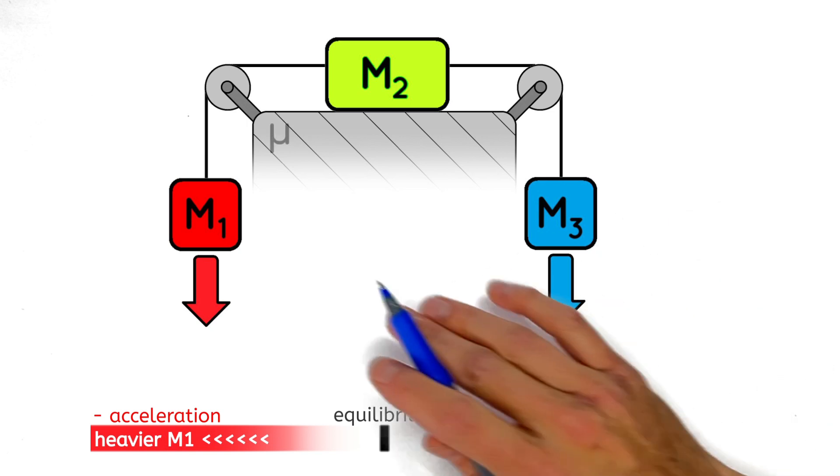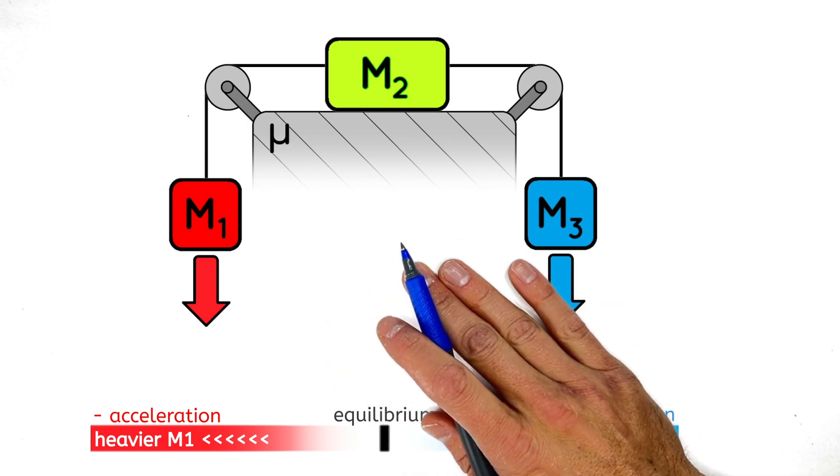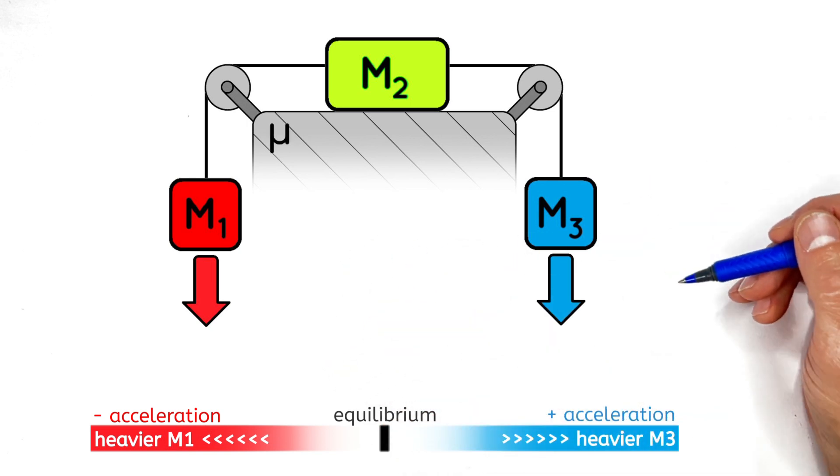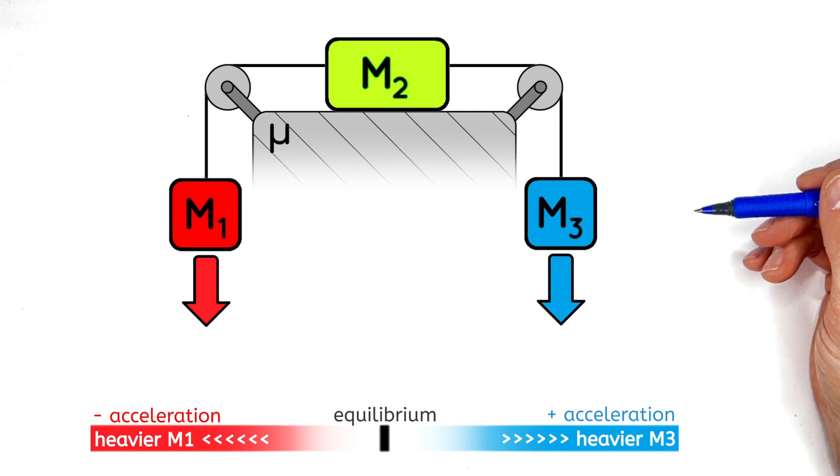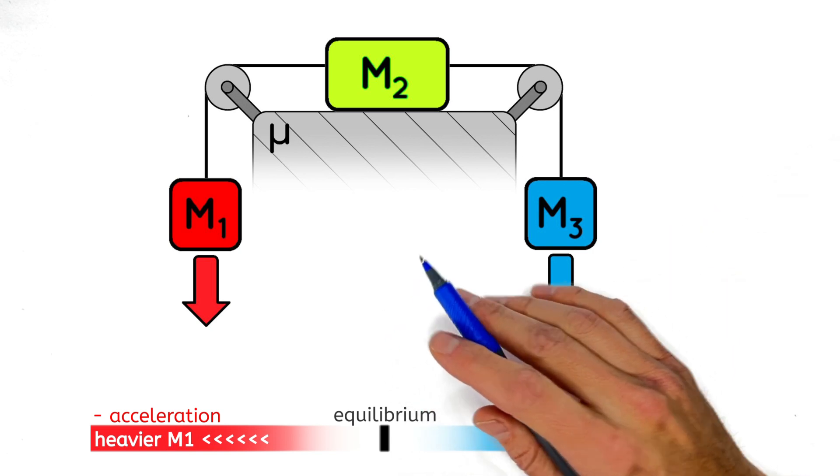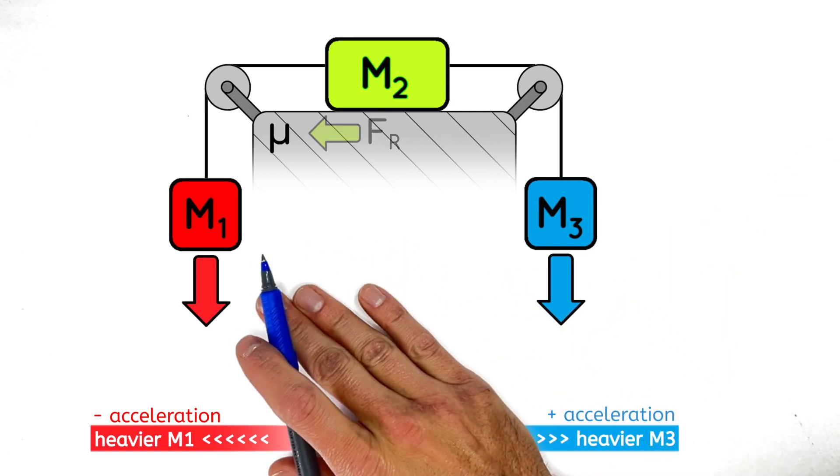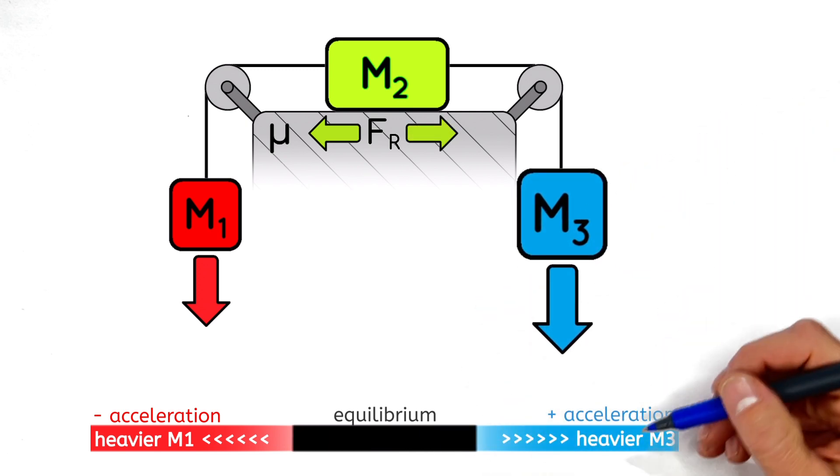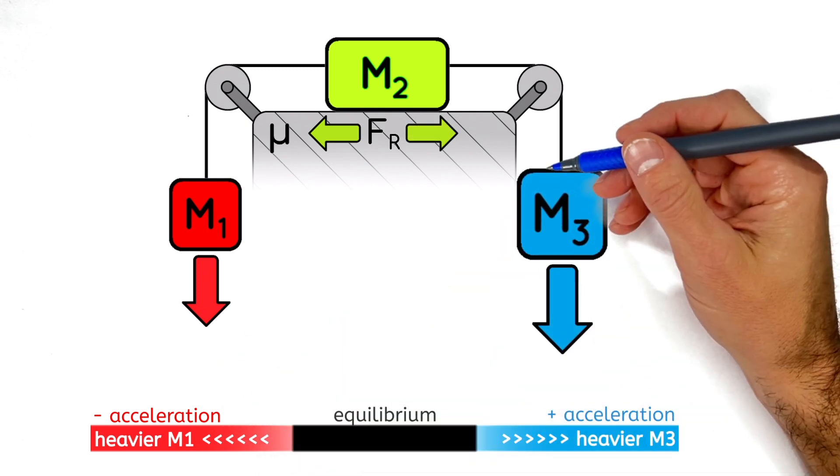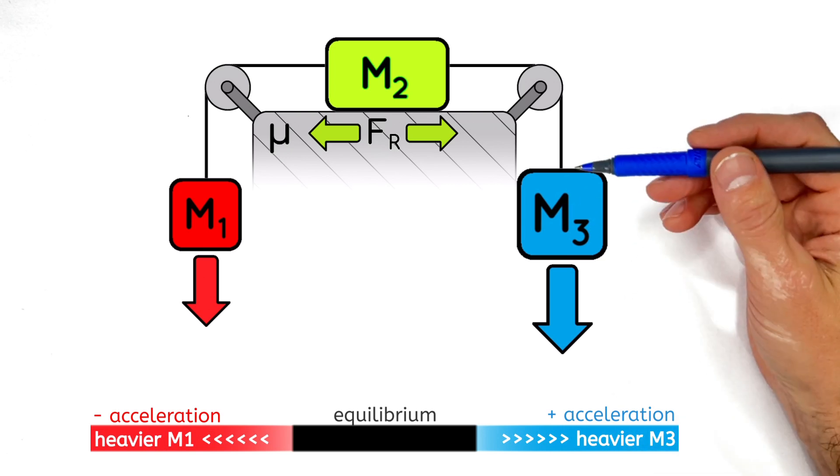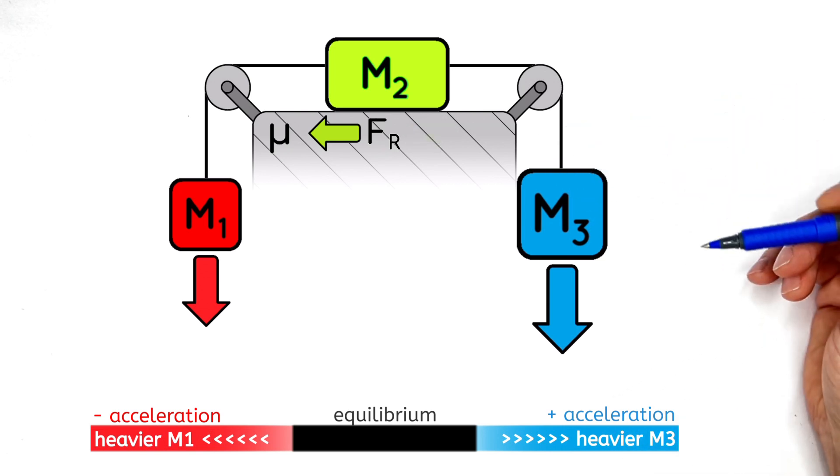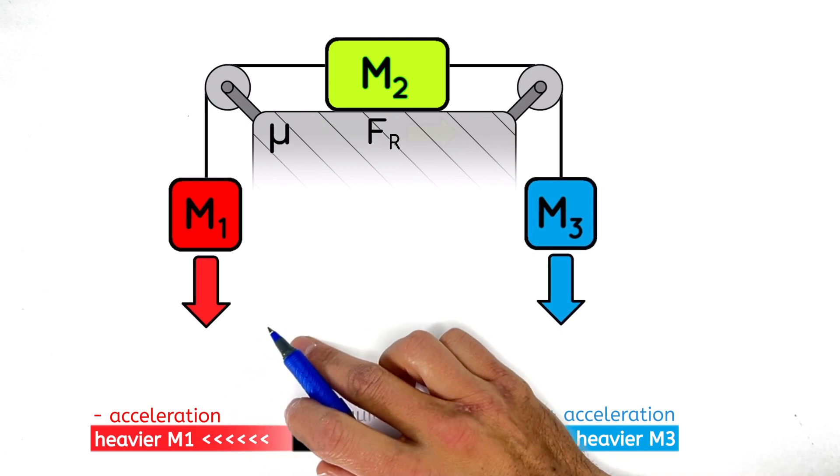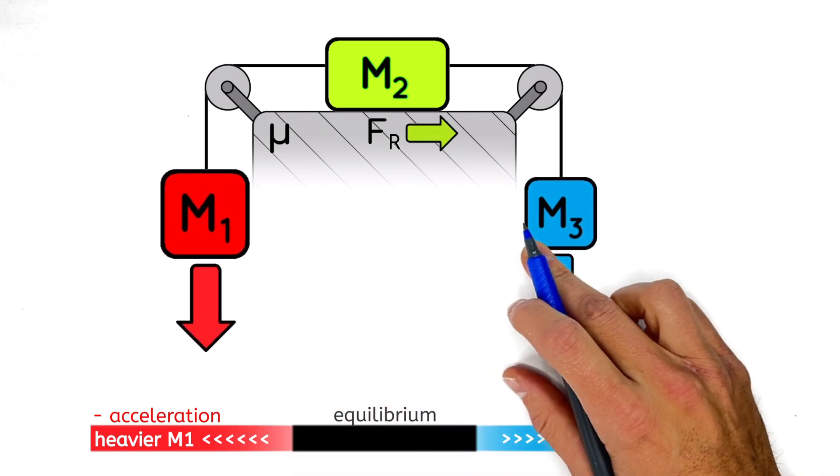But things change when we add friction into the problem here. The force of friction always resists the motion between two objects. So here, friction works to keep the center block from moving either to the left or the right. That means if this block on the right is heavier than the block on the left, and everything tries to slide to the right, then friction will act to the left, opposing that motion. On the other hand, if the block on the left is heavier, then friction's going to act to the right to oppose that motion.